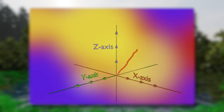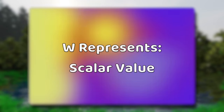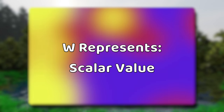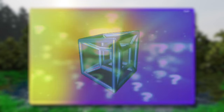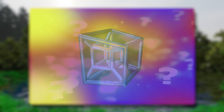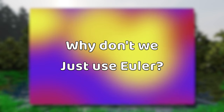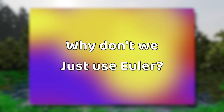In four dimensions, we have X, Y, Z, and also W. In Quaternions, W is the fourth dimension, and it does not represent time — it represents something called the scalar value. Four-dimensional math is complicated and really difficult to visualize with three-dimensional eyes. So if Euler values are easier to visualize and to talk about, why don't we just use those?